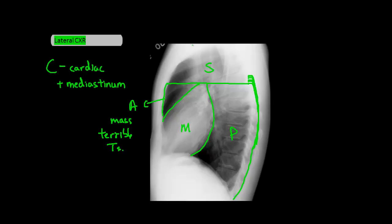In the middle mediastinum, you're mostly looking for heart enlargement. The lateral view is best for looking at right ventricular and left atrial enlargement. If there's right ventricular enlargement, you might see the anterior heart border push into the anterior mediastinum. If there's left atrial enlargement, you might see the posterior heart border expanded into the posterior mediastinum. Masses in the posterior mediastinum will most likely be neurological in origin, such as a schwannoma, neuroblastoma, or neurofibroma, since the posterior mediastinum contains the spine.